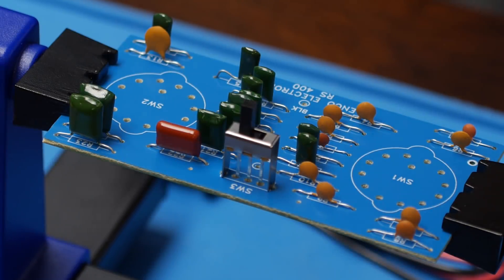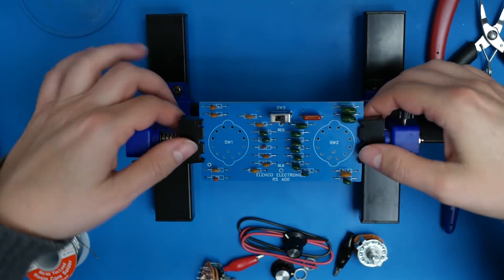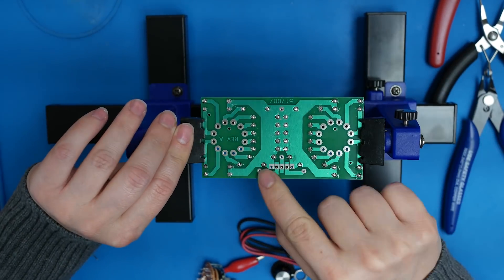Now that all the capacitors are soldered in place, let's populate the rest of the components. First, solder on the switch in the SW3 spot.